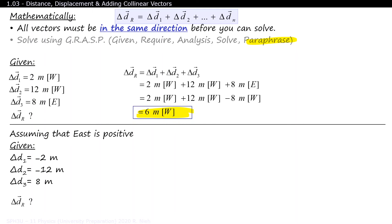We'll still need our R for require, A for analysis, S for substitute and solve. And as long as you box in your final answer, you'll receive full marks in solving the problem this way. Just make sure that if your answer is a vector, make sure that you describe the vector as a positive value. So negative 6 meters east should be written down as 6 meters west.